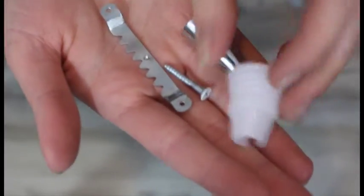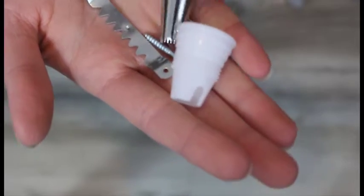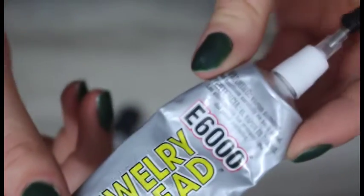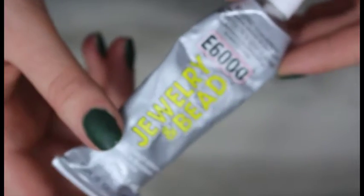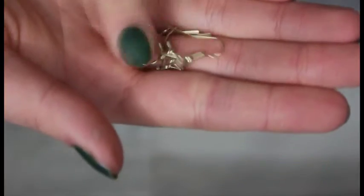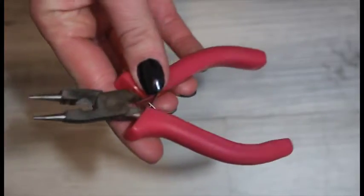Start out with several small different shapes that you can shape your different earrings with. You're going to want an exacto cutter, different colors of clay, tinfoil on a pan or you can actually use parchment paper, rolling pin, back studs of earrings, jewelry glue E6000, normal earrings, and jewelry pliers.